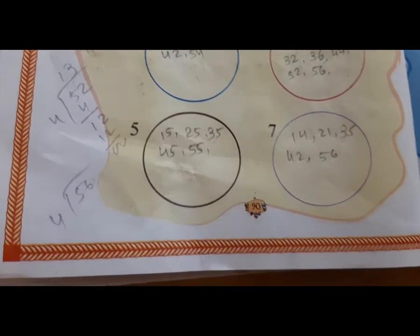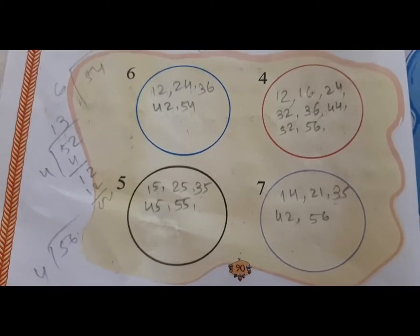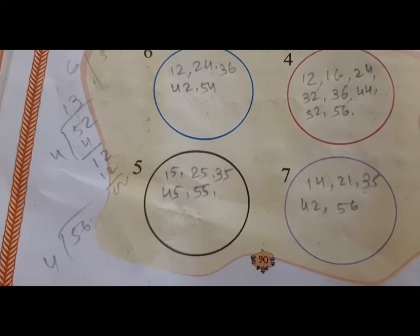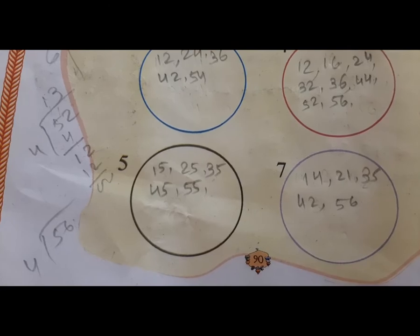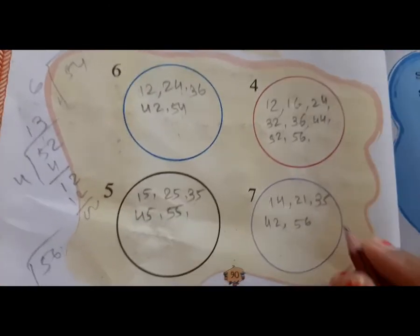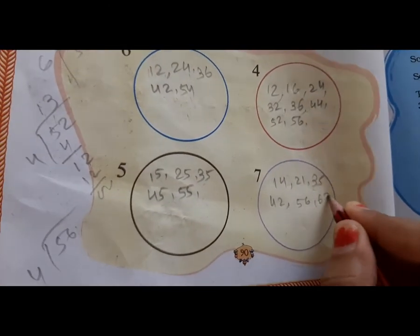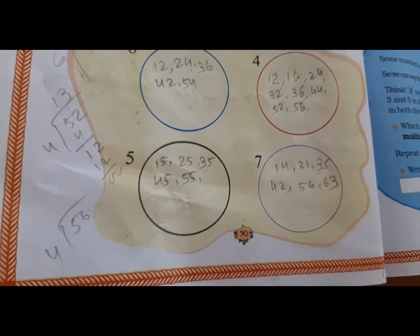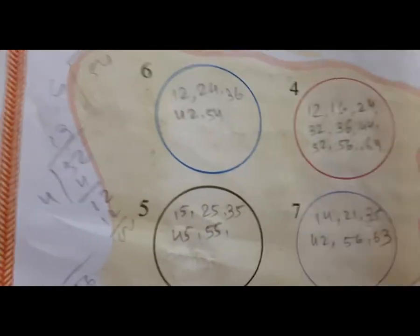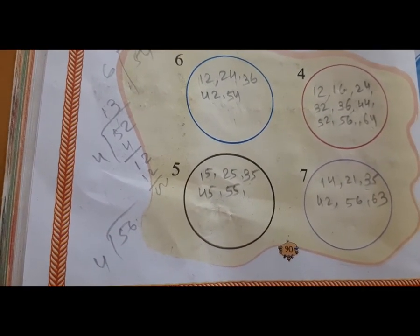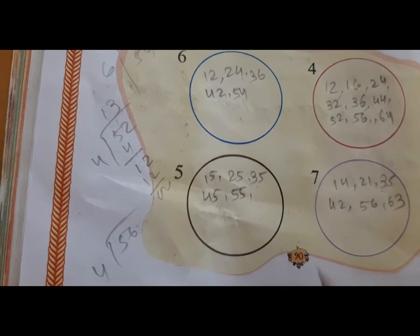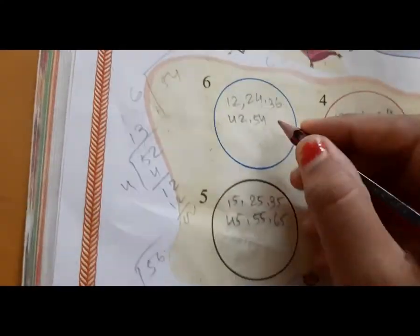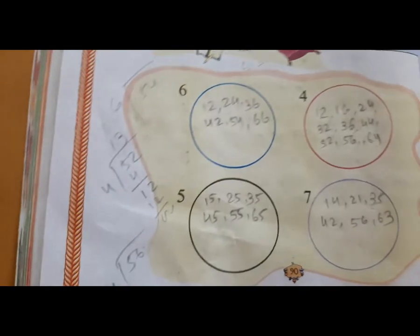Then 61 is not a multiple of any. 62 is also not a multiple. 63 is a multiple of 7. 64 is a multiple of 4. 65 is a multiple of 5. 66 is a multiple of 6.